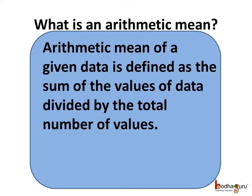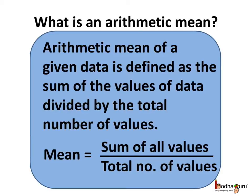First, what is an arithmetic mean? The arithmetic mean of a given data is defined as the sum of values of data divided by the total number of values. Its formula is: mean = sum of all values divided by the total number of values.